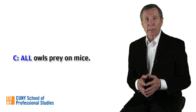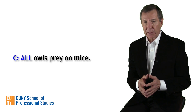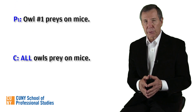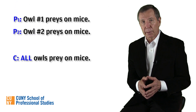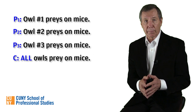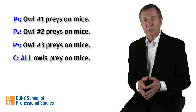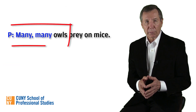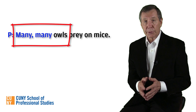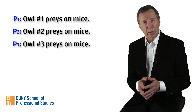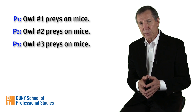Secondly, we could enumerate a large number of specific statements as premises, such as: owl number one preys on mice, owl number two preys on mice, owl number three preys on mice, and so on — so all owls prey on mice. The first method, which uses a non-universal generalization in the premises, is a handy shortcut. The second, which enumerates a series of specific statements, is more complete and is a method often used in the sciences.